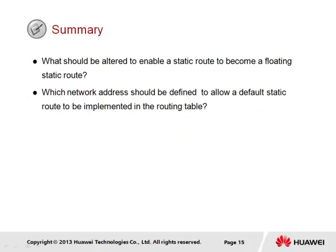In summary, two key questions arise. First, what should be altered to enable a static route to become a floating static route? It is necessary to adjust the preference of one of two equal static routes so that it remains inactive until the primary route fails. Second, which network address should be defined for a default static route? The default static route uses the special network address 0.0.0.0 with a prefix of 0, ensuring all other routes take precedence via the longest match rule. Where no match is found, the default static route forwards all other IP packets via the default next hop.